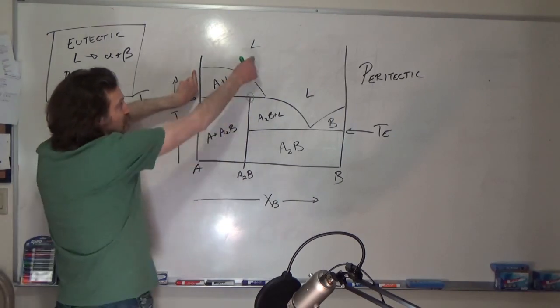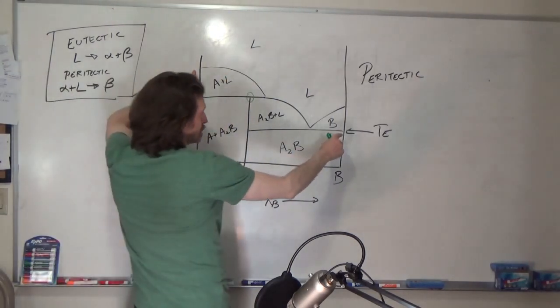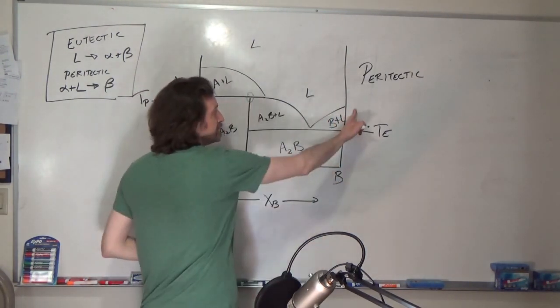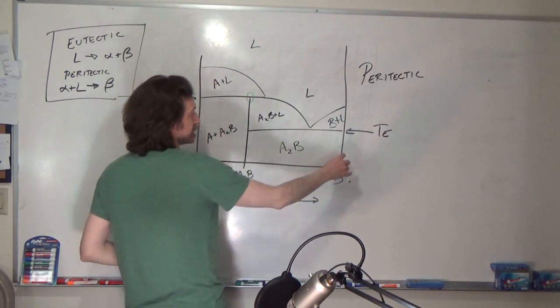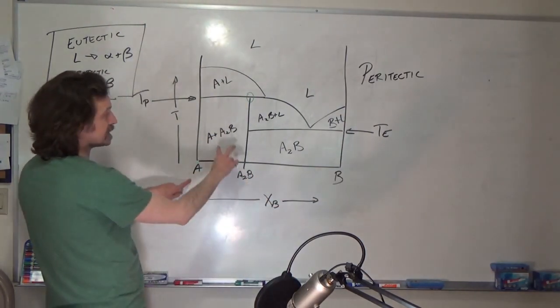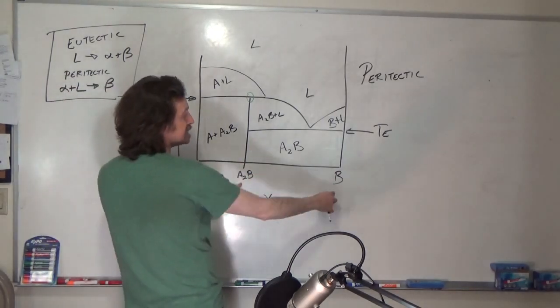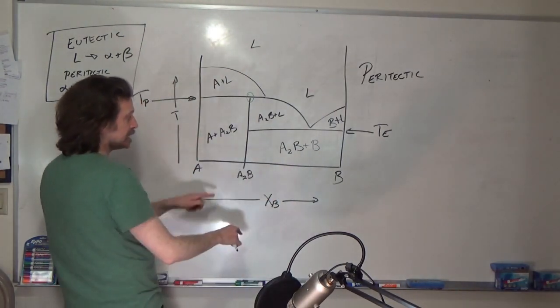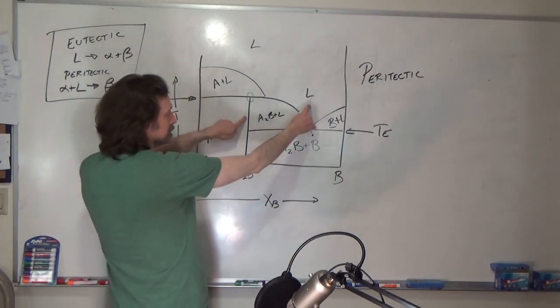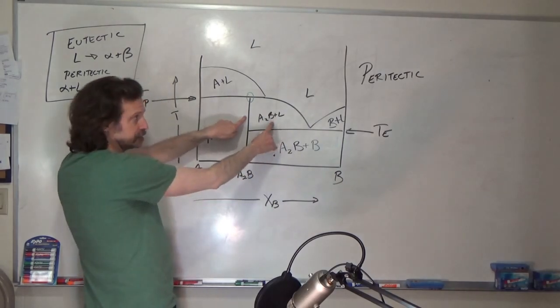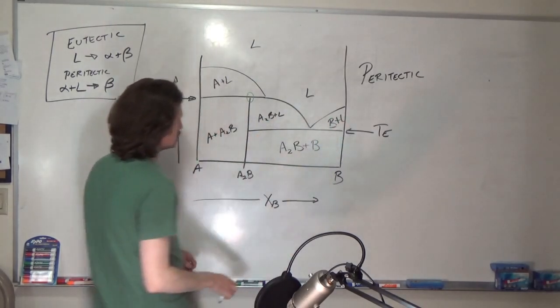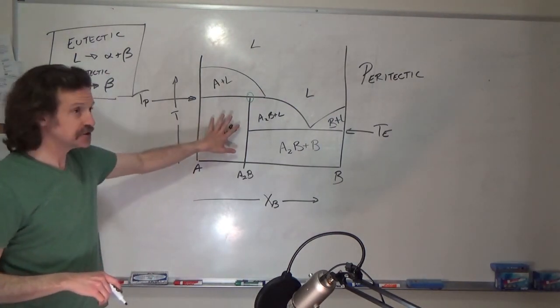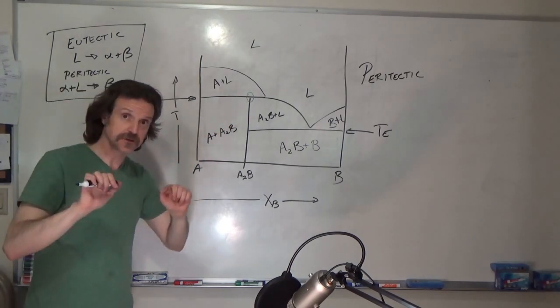So that's why I filled it in here for you, and you should probably practice that on your own. But I've got A, liquid, two-phase region. I've got A to B, A, two-phase region. I've got A to B, B, two-phase region. Here I've got A to B, liquid, two-phase region. And I've got B, liquid, two-phase region. So, everywhere that there should be a two phase region separating single phase regions, we have those.